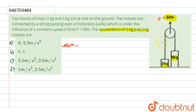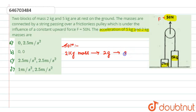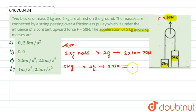First, we need to find the tension in the string, because the masses will be lifted only if the tension in the string is greater than the gravitational pull. For the 2kg mass, the gravitational pull is 2 into g equals 2 into 10, which is 20 newton. For the 5kg mass, it is 5 into g equals 5 into 10, which is 50 newton.